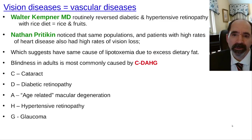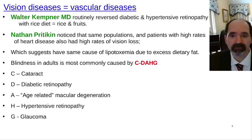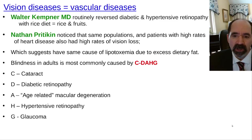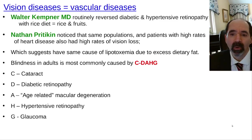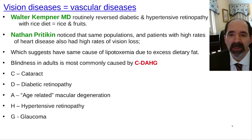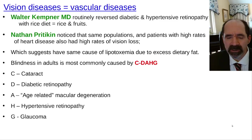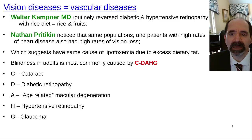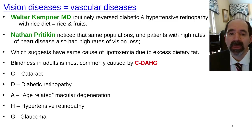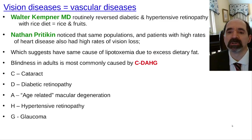Walter Kempner put his patients on a rice diet consisting mostly of white rice, fruits, and fruit juice. He had incredible results, with hundreds of retinal photographs where patients started out with diabetic retinopathy or hypertensive retinopathy and reverted completely to normal according to his scientific publication. Some only partially reverted, but many had improved sight and normalized retinal photographs.